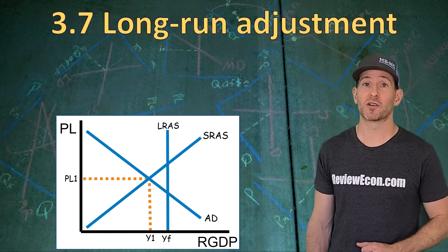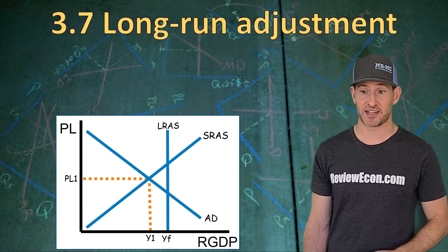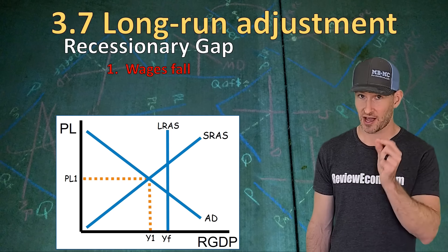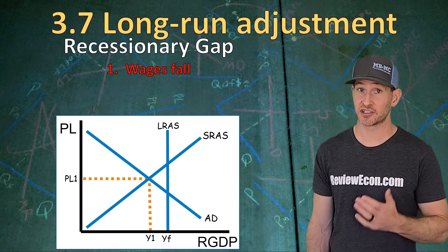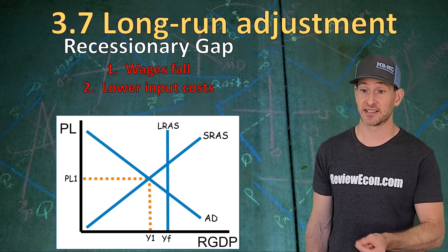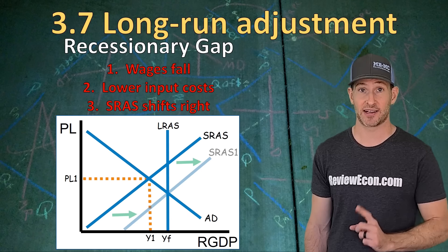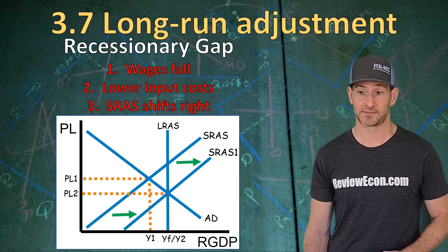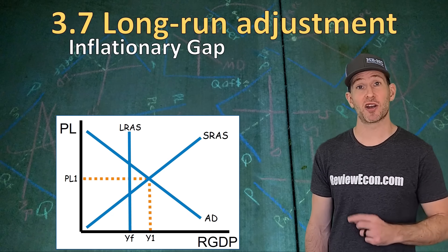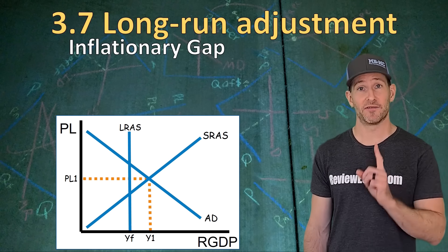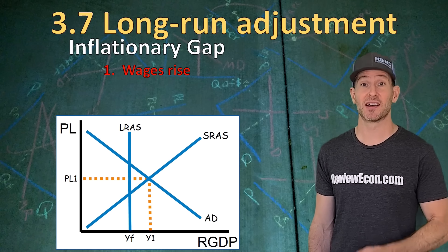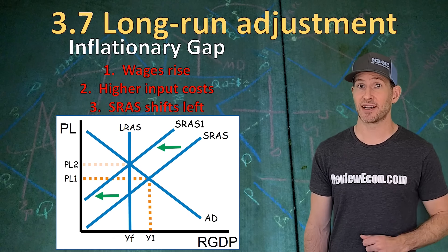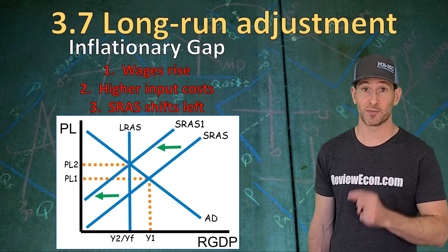In the long run, the economy will return to long-run equilibrium even without government intervention. In a recessionary gap, wages fall because unemployed workers eventually accept lower wages to find work. Those lower input costs cause the SRAS to shift to the right, restoring long-run equilibrium at lower prices but back to full employment. In an inflationary gap, the economy is producing more than its long-run potential, so eventually wages and other resource prices rise. Those higher input costs shift the SRAS to the left, increasing price levels but returning the economy to the full employment level of output.